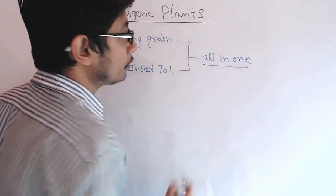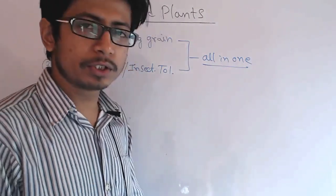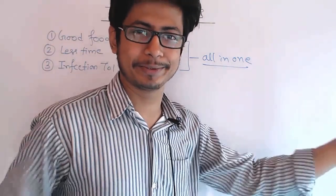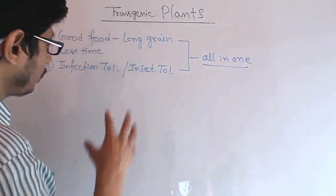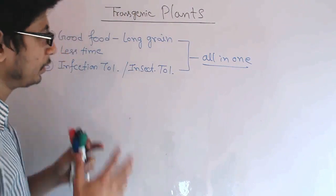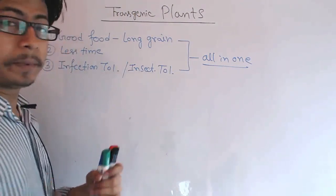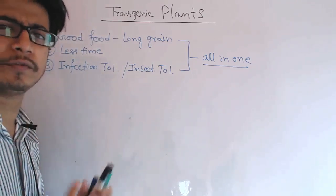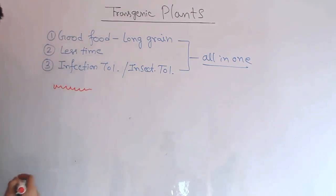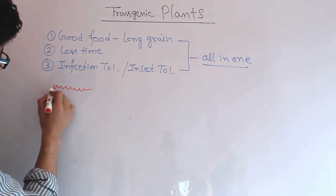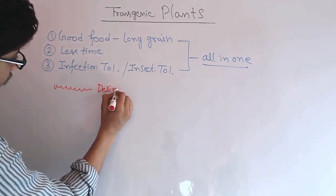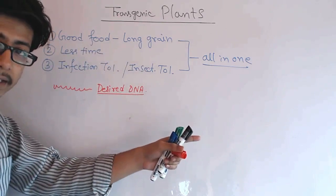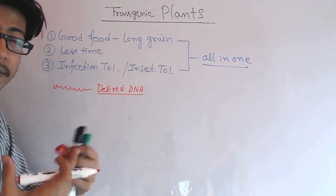This is the thinking behind the transgenic approach — to grab all these traits in one plant, you need to use genetic engineering. You cannot do that by normal or traditional plant breeding because that would take years, even decades. So since we know the genetic makeup of the plants we eat — rice, corn — what we can do is identify the desired gene that will give us better quality food, such as a long-grain rice gene. That is our target desired DNA.